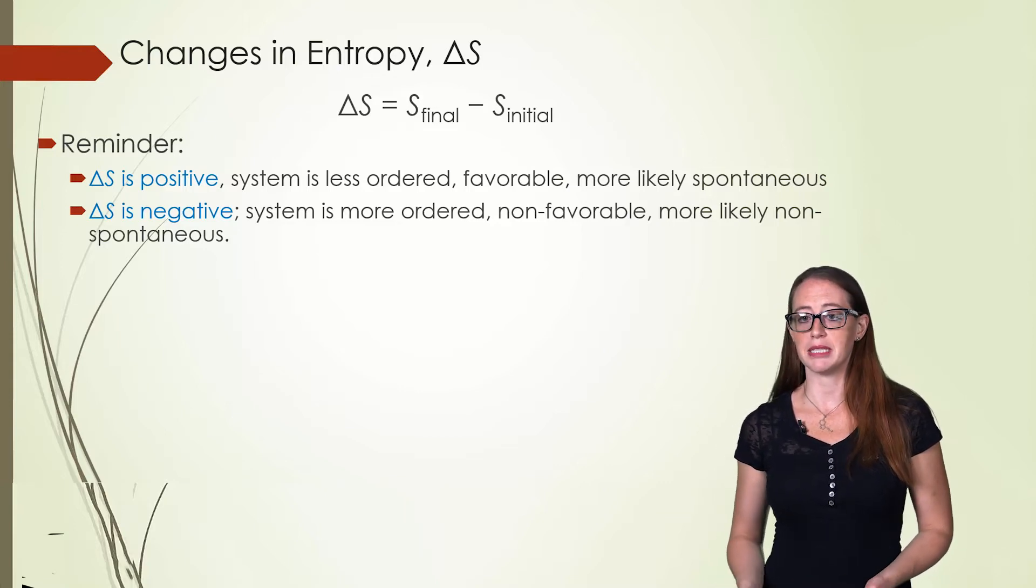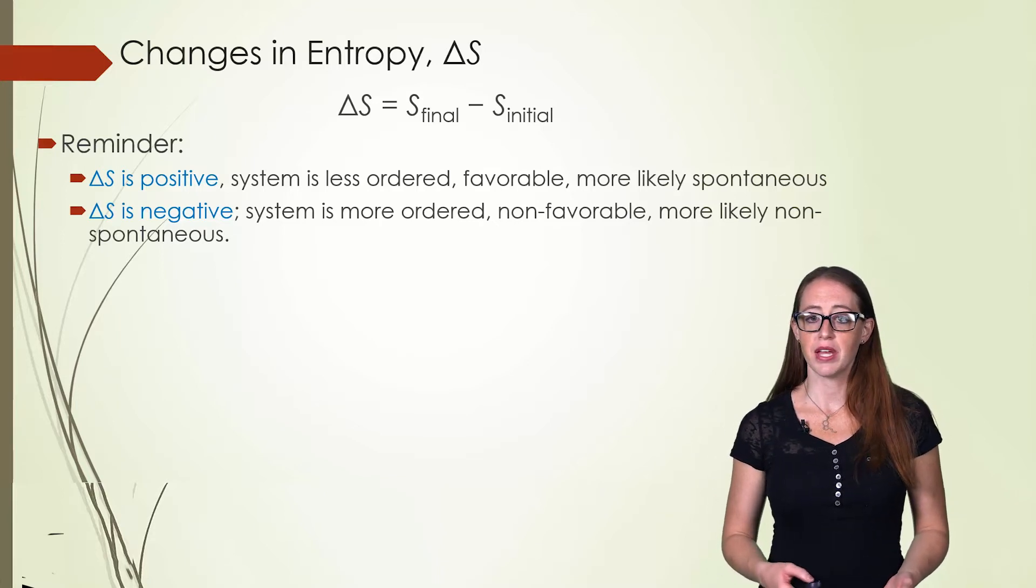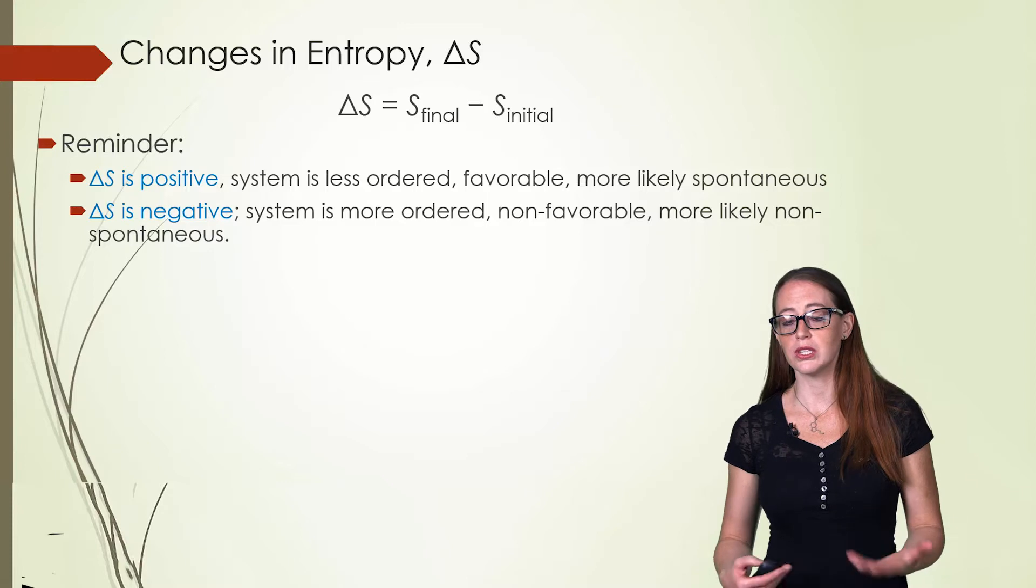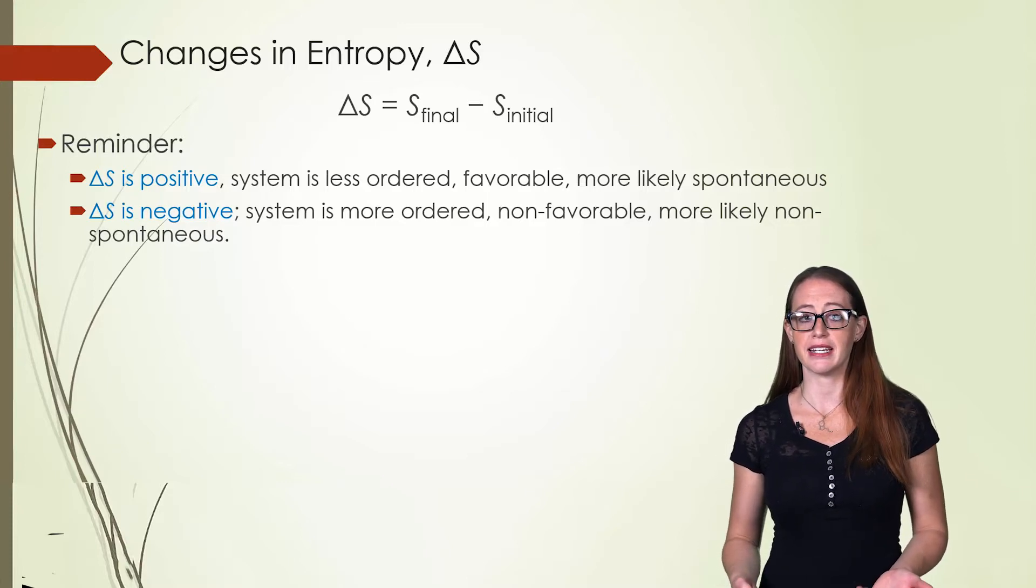That means it's more likely to be spontaneous. If the change is negative or entropy decreases, the system is more ordered or less random. This is a non-favorable process that is more likely to make it non-spontaneous.